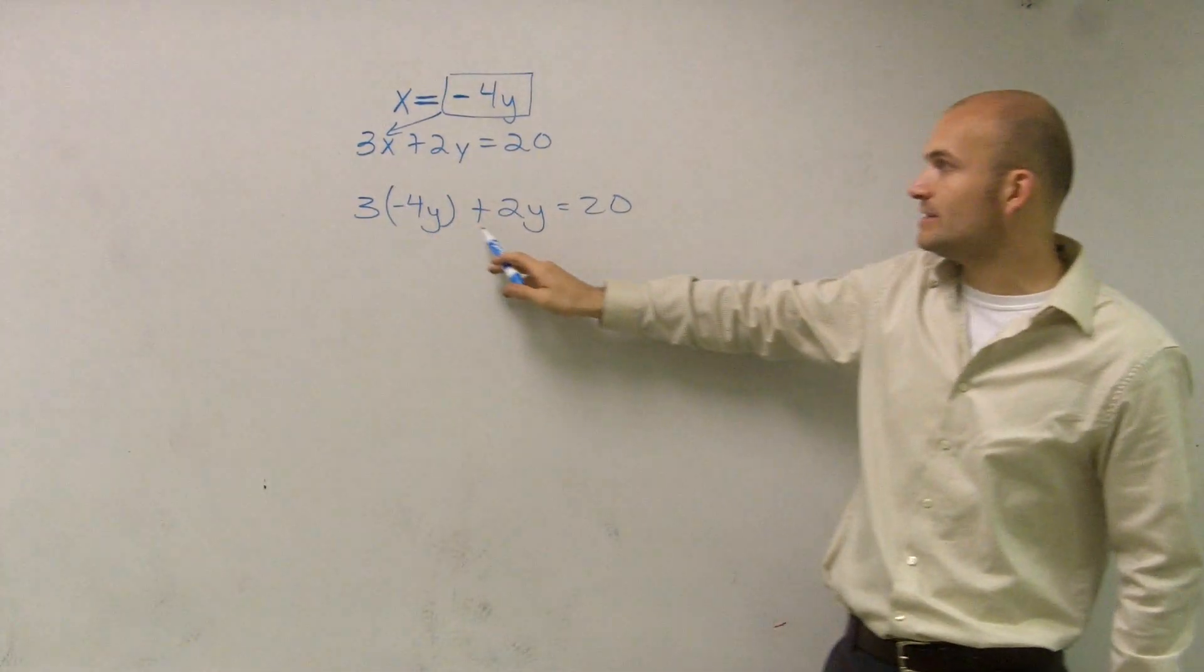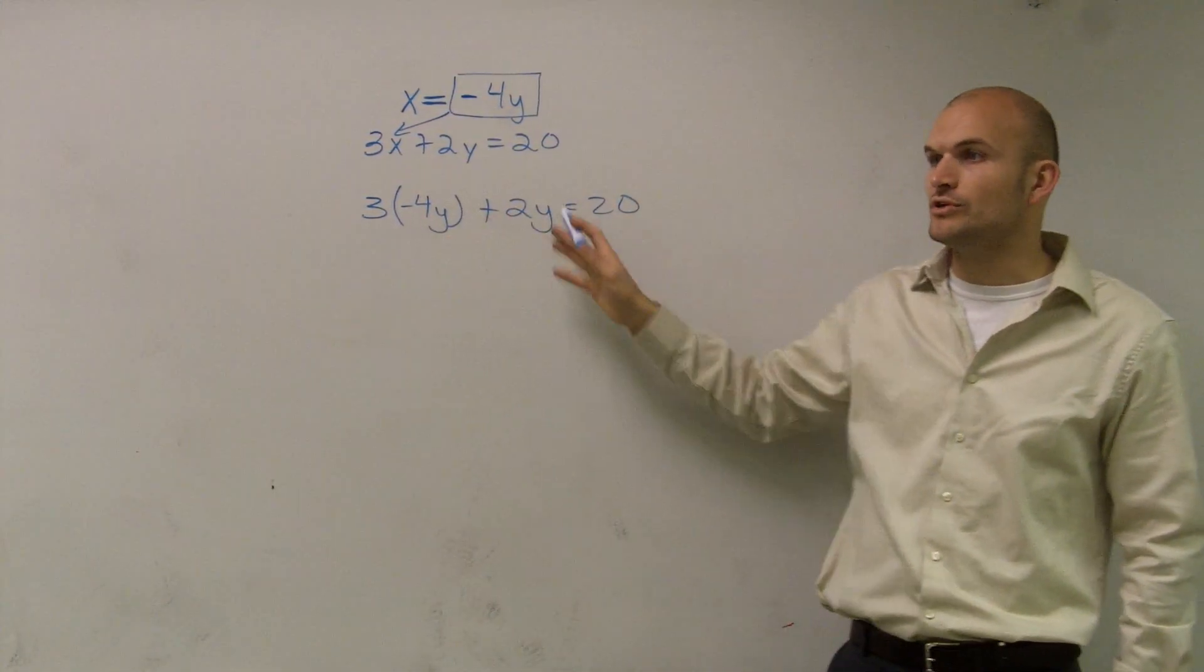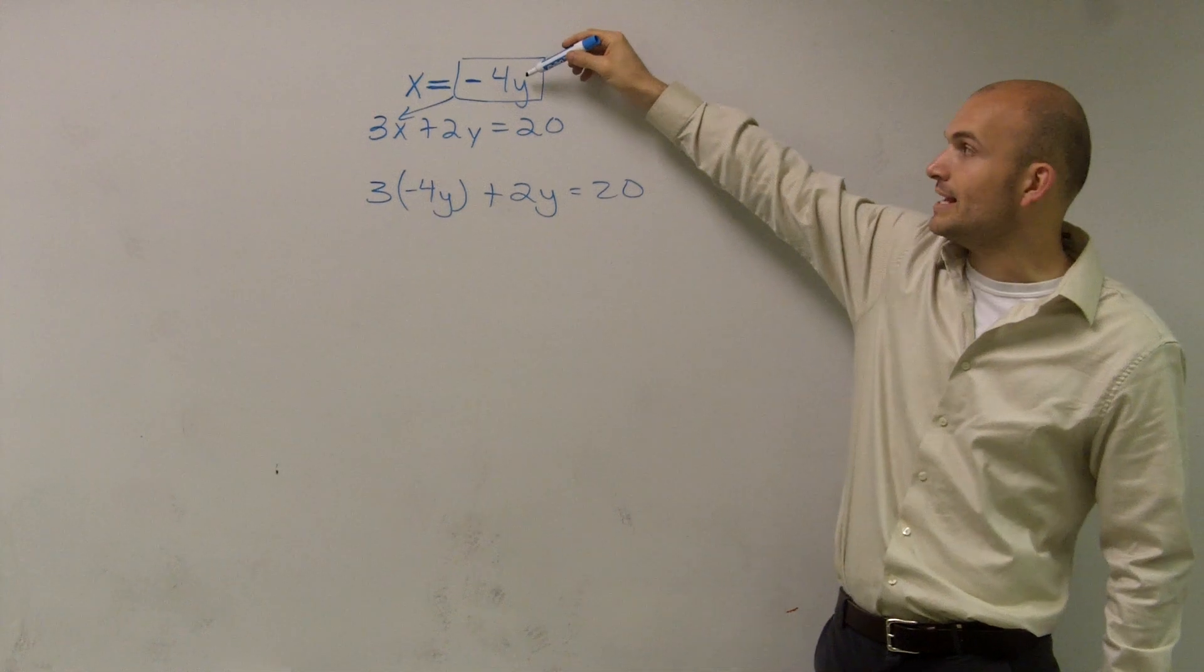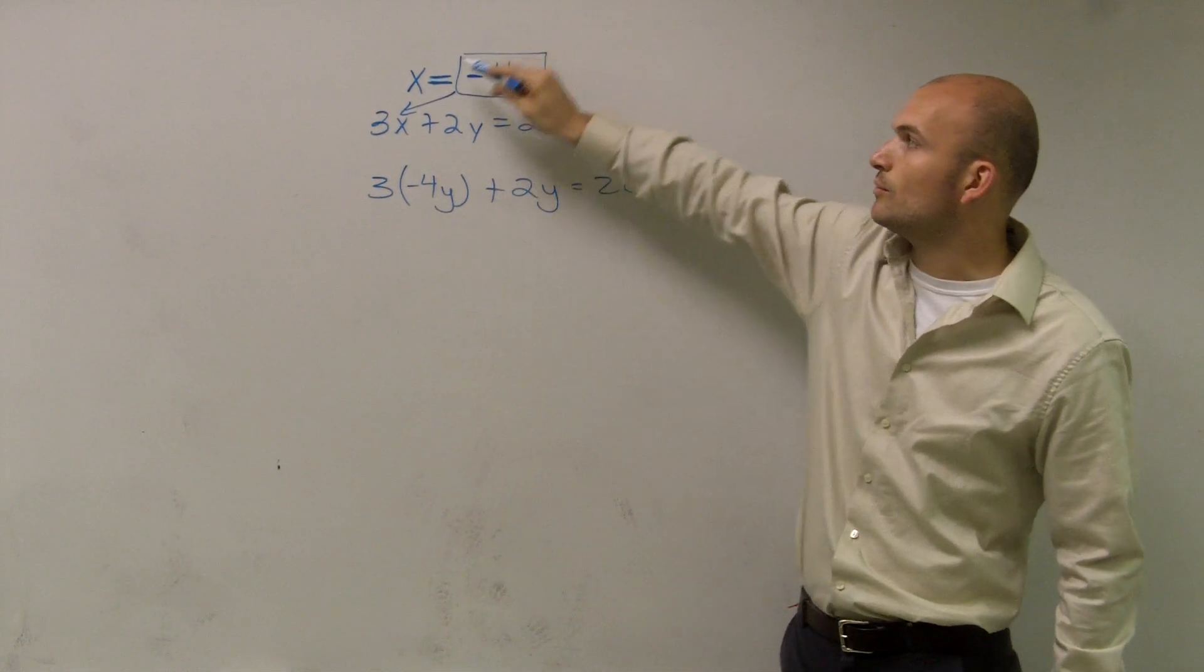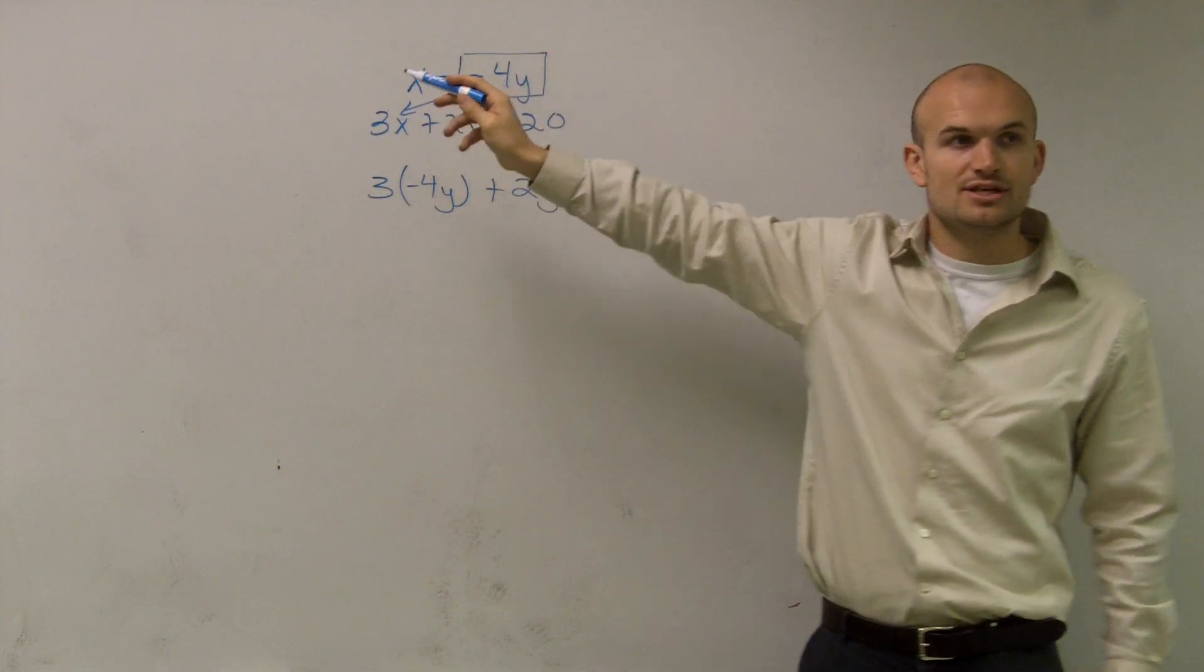I want to get y equals this number and x equals this number. So when I'm doing this, you want to get your same variable in the equation. That's why you substitute in what one of your variables equals for that variable.